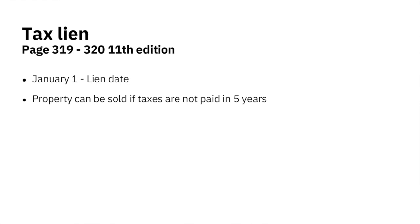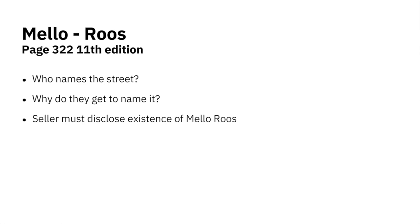On page 322, there's a gray box that says Mello-Roos. Think of the street you live on — who named it? The street was named by the developer that built the houses. When a developer builds a bunch of houses, they get the privilege of naming the streets because they have to pay to put the street in — including what we call off-site improvements: streets, sidewalks, curbs, gutters, lights, and sewage systems.